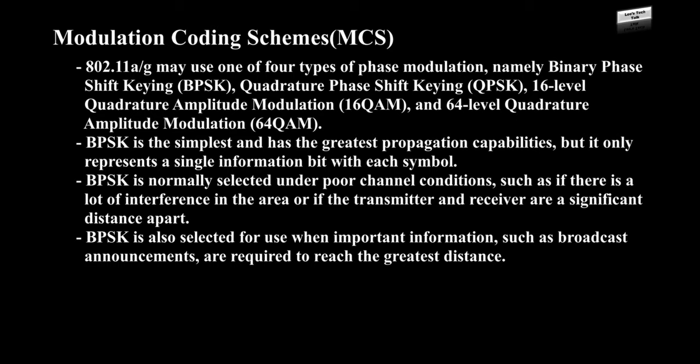Modulation coding scheme, MCS: 802.11a or 802.11g may use one of four types of phase modulations — binary phase shift keying, BPSK; quadrature phase shift keying, QPSK; 16-level quadrature amplitude modulation, 16 QAM; and 64-level quadrature amplitude modulation, 64 QAM. BPSK is the simplest and has the greatest propagation capabilities, but it only represents a single information bit with each symbol. BPSK is normally selected under poor channel conditions, such as heavy interference or significant distance between transmitter and receiver. BPSK is also selected when important information, such as broadcast announcements, must reach the greatest distance.